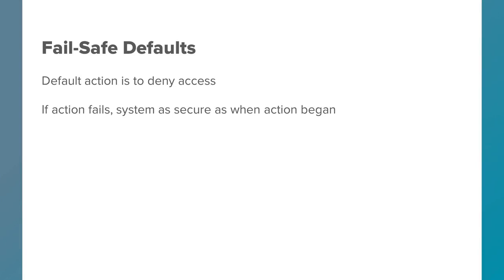The principle of fail-safe defaults — if you've ever watched any of the old Cold War movies where the bombers are getting ready to attack, the bombers fly to a certain point and then they stop. They cannot proceed beyond that point unless they are given a direct instruction to proceed. They call those points the fail-safe points, because if communication breaks down, the bombers will stay where they are and not attack. That's an example of fail-safe defaults.